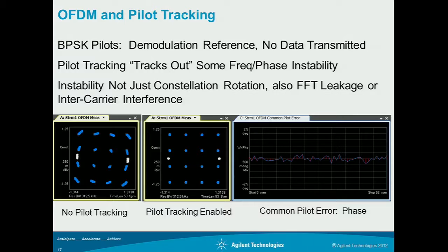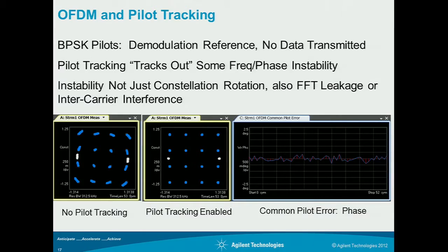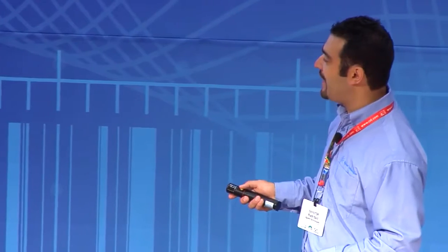Without pilot tracking, if you had some phase noise on that receiver or transmitter, it would rotate the constellation — you would have a poor EVM. But when you turn pilot tracking on, the reference becomes the pilot channels, and they can effectively remove some of that phase error — now you get good EVM performance.